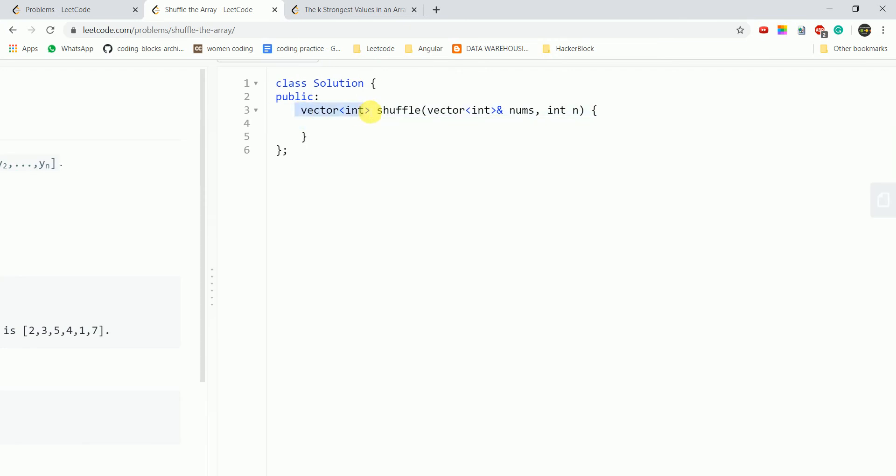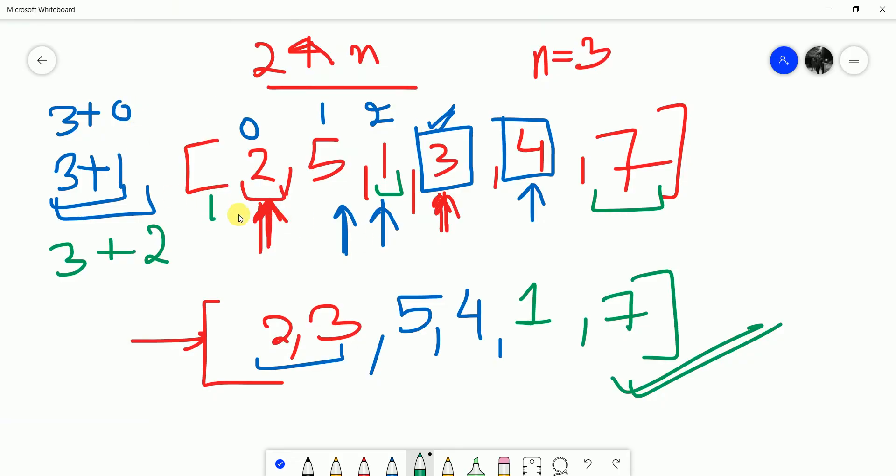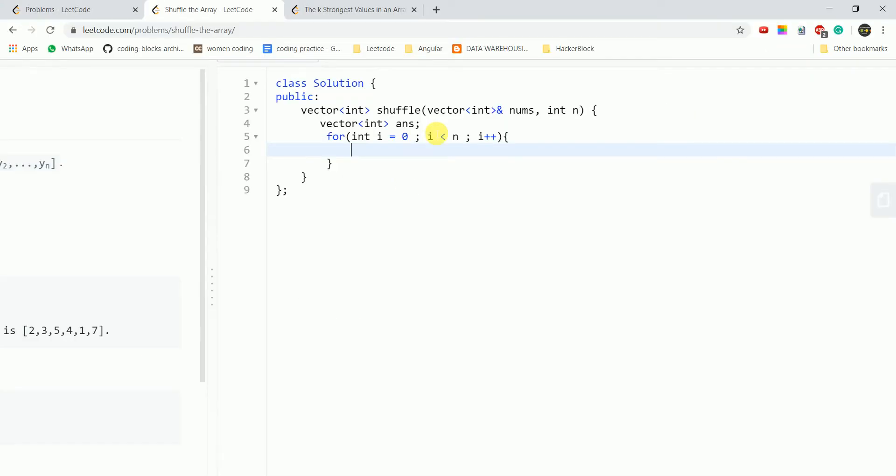So what we need is a vector of int, we'll name it as the answer. Then what we do is int i equals 0, i is less than n, i plus plus, since we just have to iterate half of the array till n. So we are iterating up till n.